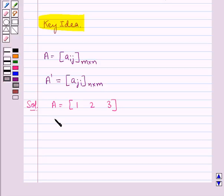Now let's find out A dash, that is the transpose of the matrix A, which is obtained by interchanging the rows and columns of the given matrix A. And so this would be equal to 1, 2, and 3 in a column. So this is the transpose of the given matrix A.